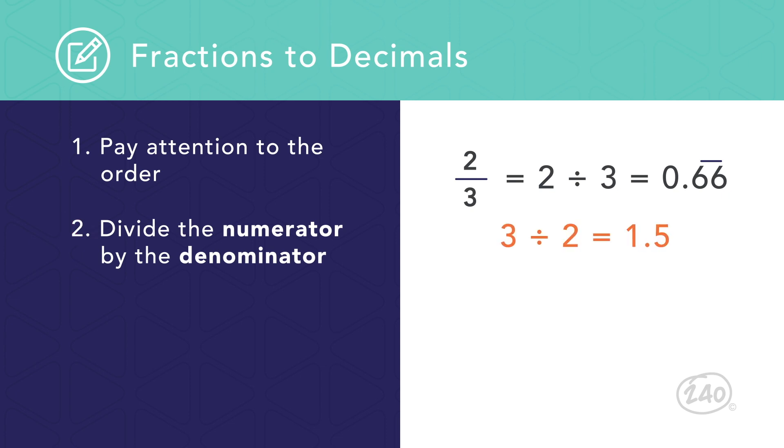If we accidentally did this in reverse order, a calculator would give us the terminating decimal 1.5. It is important to realize that two thirds means there are two out of three total parts. So two thirds should be less than one.